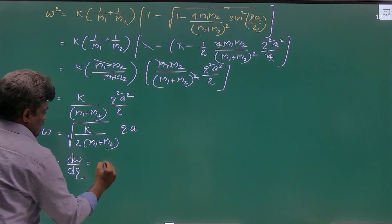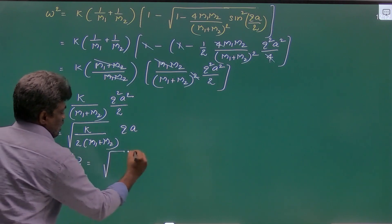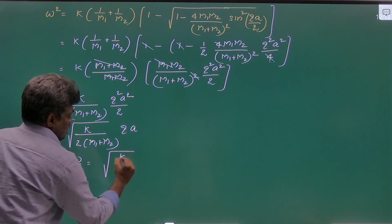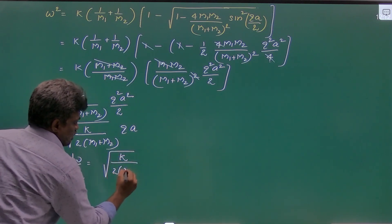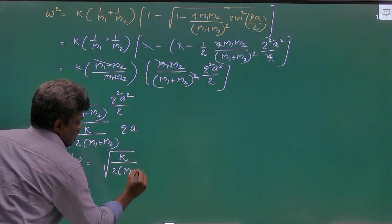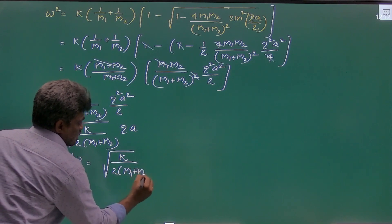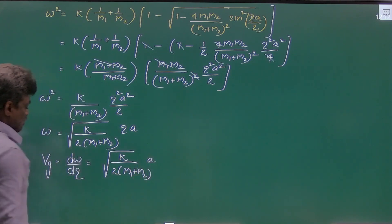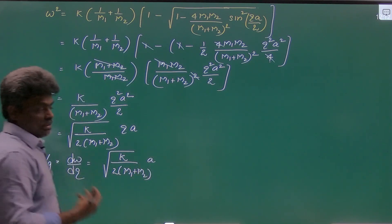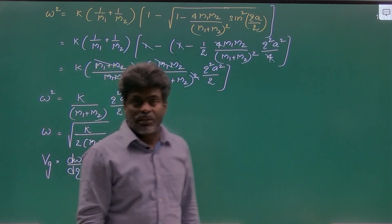Taking d omega by dq, which is equal to root of k/2 times (m1+m2), times a. This is the group velocity.